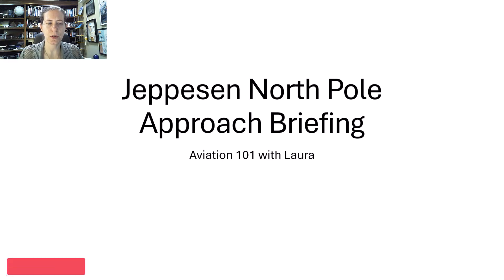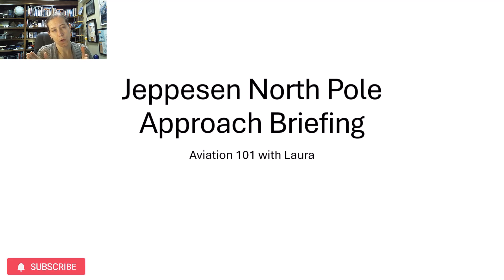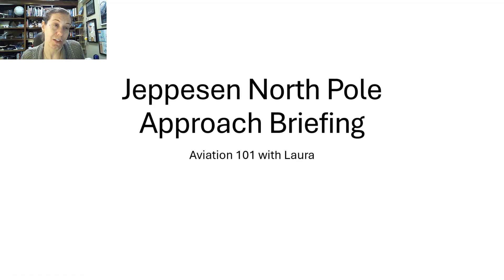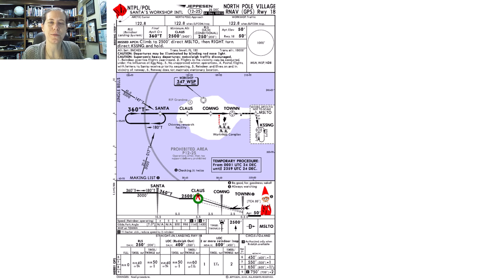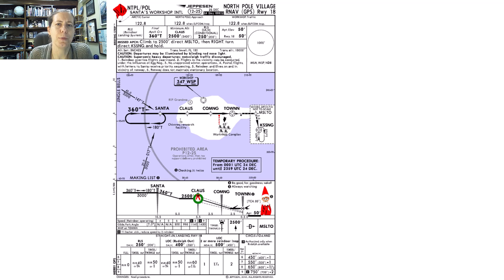Hello and welcome to Aviation 101 with Laura. It is almost Christmas and I thought it would be really fun to do an approach brief overview for a little known approach called the Jeppesen North Pole Approach. This approach is not usable for navigation, unless you're Santa, but it still is an approach chart. Jeppesen made this chart legitimately and released it on their website — I'll put a link in the video description. It is full of funny little quirks and Easter eggs, but we can still do an approach briefing in theory using this as our example.